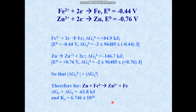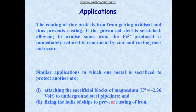In summary, from redox potential we can determine which species acts as oxidant and which as reductant, and we can calculate the equilibrium constant. One practical application: coating zinc on iron — known as galvanizing — protects iron from oxidation and prevents rusting.